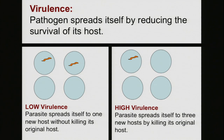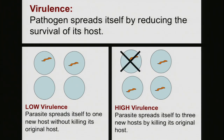Now consider a high virulence parasite — one that can spread itself into a lot of new hosts but has to kill its current host in order to do so. It's making lots of copies of itself, hijacking so many of the host's resources that it damages its current host, but meanwhile it manages to spread itself to a lot of new hosts. That's high virulence.